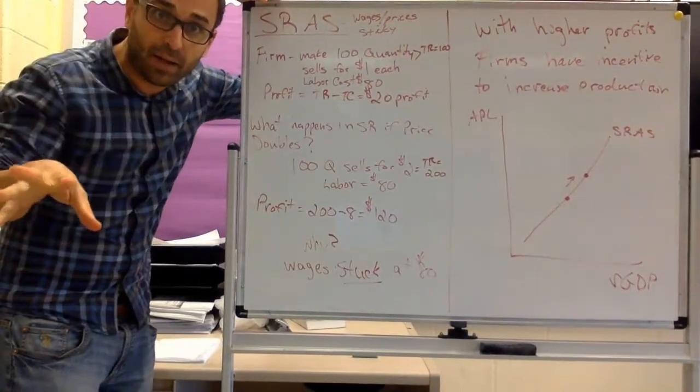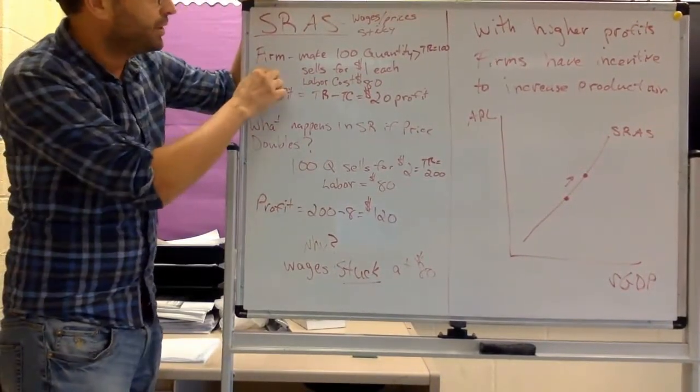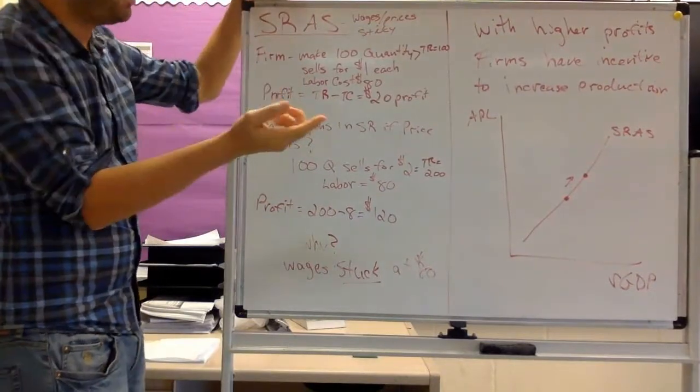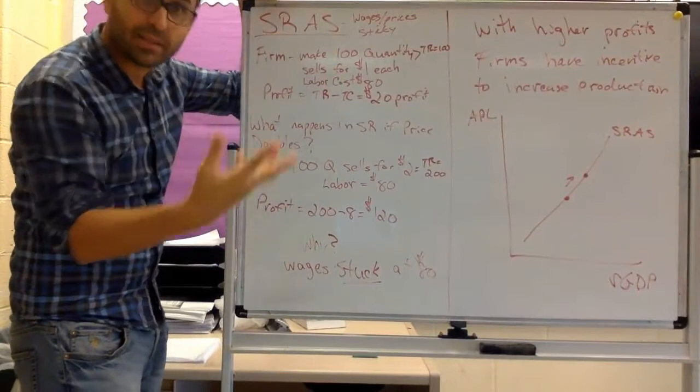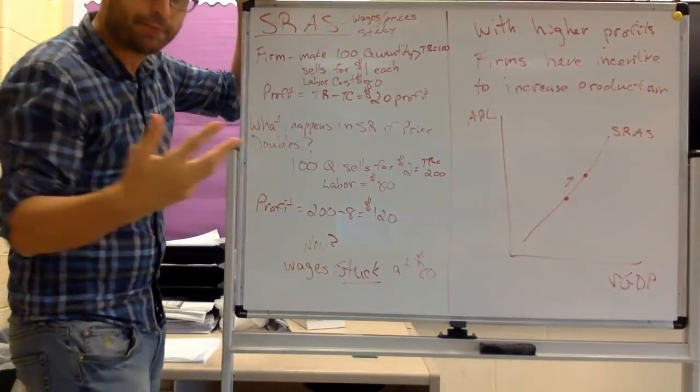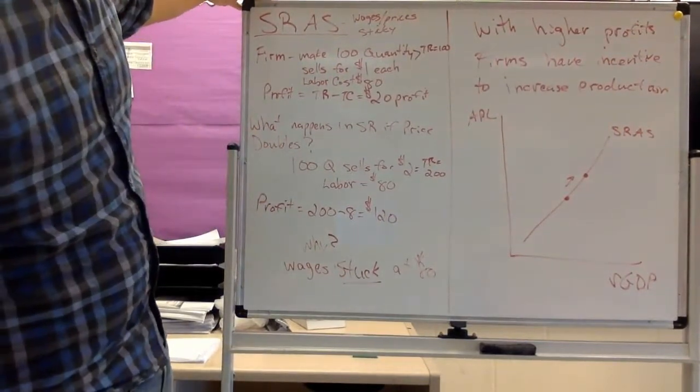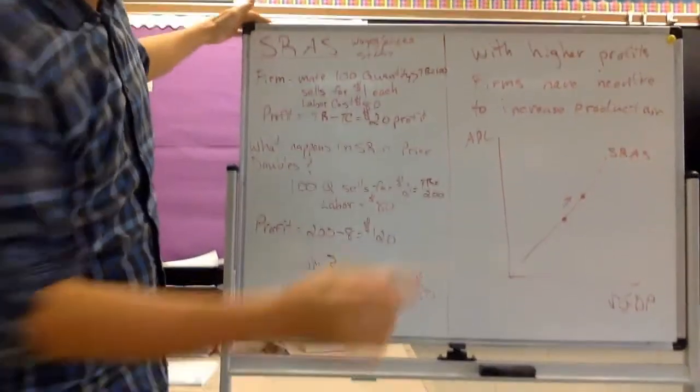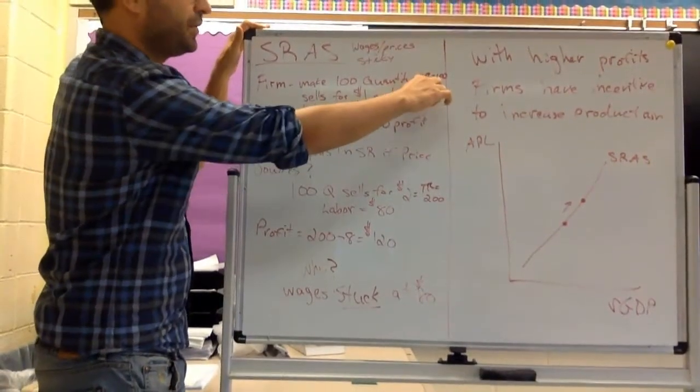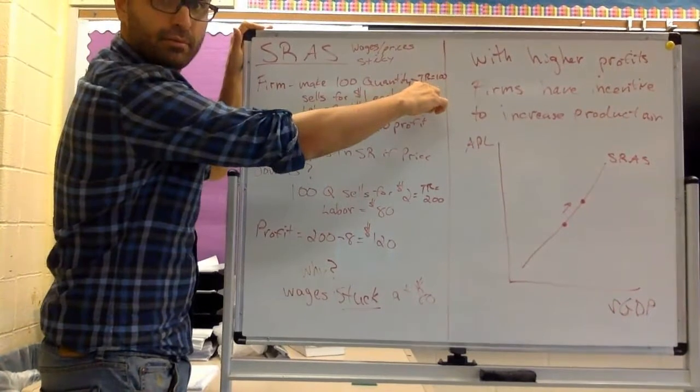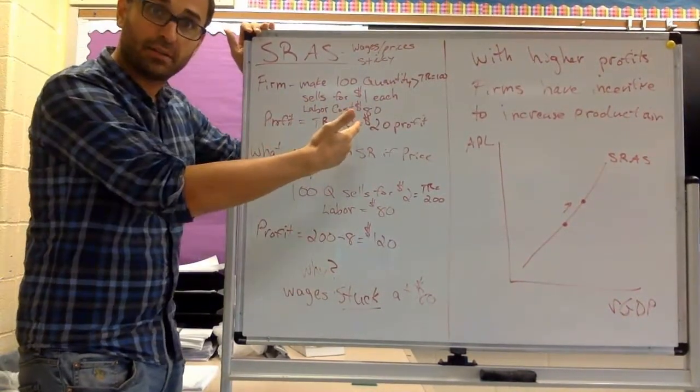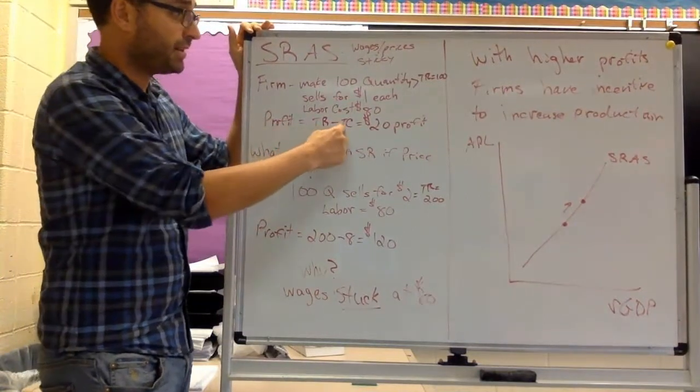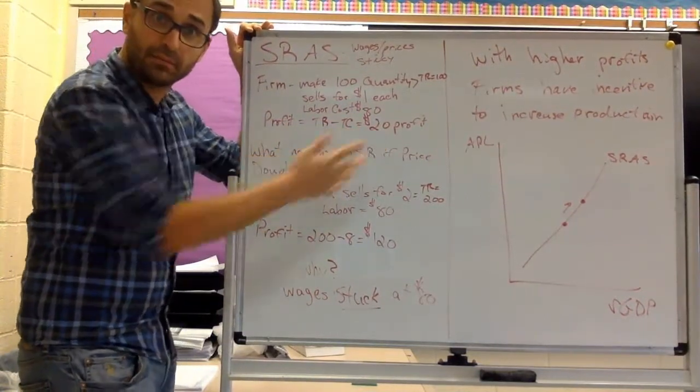Here's an example as to what I mean by all that. This firm, I'm going to use the same example for both. This firm makes 100 units or quantity of this particular good and it sells for $1 each. So the total revenue is 1 times 100 is $100. The labor cost to produce it is $80. So the profit is total revenue minus cost, $20 profit. Simple.